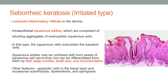The first subtype is the irritated type, which shows a predominant lichenoid inflammatory infiltrate in the epidermis and presence of intra-epithelial squamous eddies composed of whirling aggregates of eosinophilic squamous cells. In this type, squamous cells outnumber basaloid cells. These eddies may be confused with the horn pearls of squamous cell carcinoma, but they can be differentiated by their large number, small size and circumscribed nature. Other features include apoptotic cells, occasional dyskeratosis, acantholysis and spongiosis.